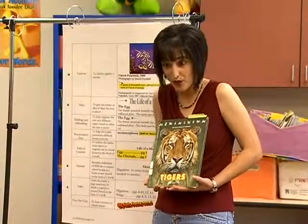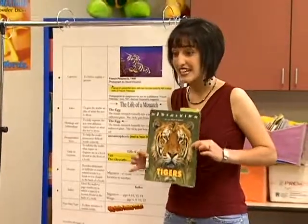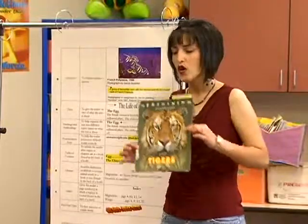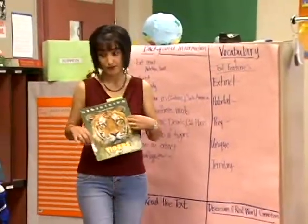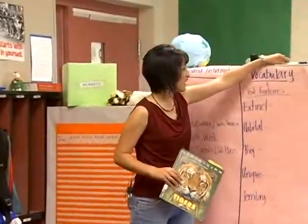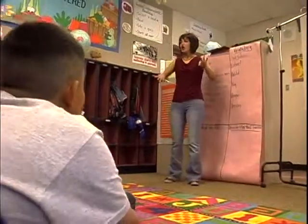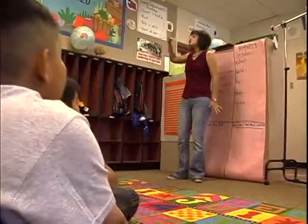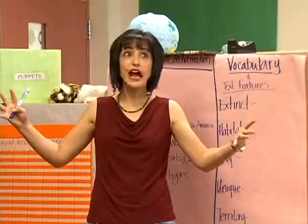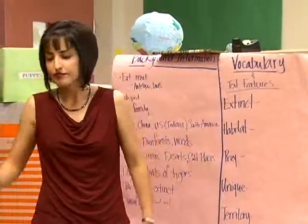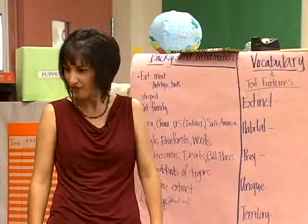Erica then discusses a few preselected words that she feels children must know before reading the text. Before we read the book tomorrow, there are some important words that I think we should know. For instance, extinct. If I say, oh my gosh, there were dinosaurs as big as this room a long time ago — they were so big. But now they're extinct. What does that mean? They're all gone, right?